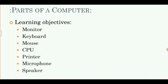The main parts of a computer are the phone, monitor, keyboard, mouse, and CPU. The extra parts of a computer are the printer, microphone, speaker, and there are many other things that we can add to the computer.